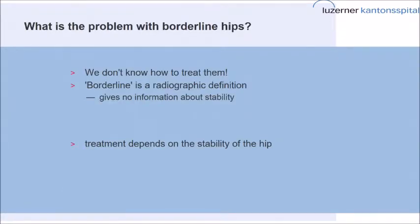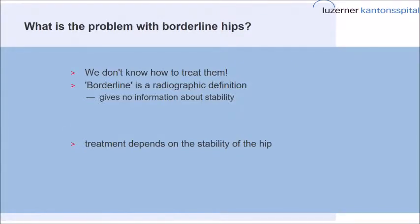What is the problem with the borderline hips? We don't really know how to treat them because we don't know if they're stable or not. We have to understand that borderline is a radiographic definition and gives absolutely no information about stability. But the treatment we are supposed to do depends on the stability of the hip. The principal question we have to ask is: is the hip stable or is it not?